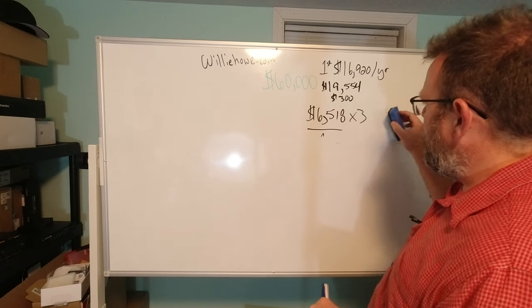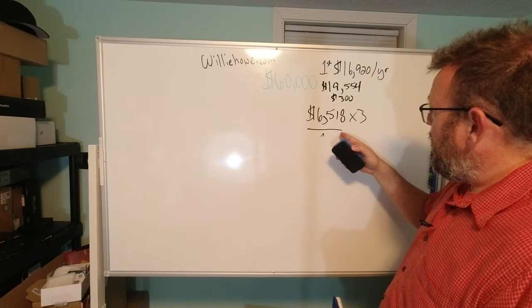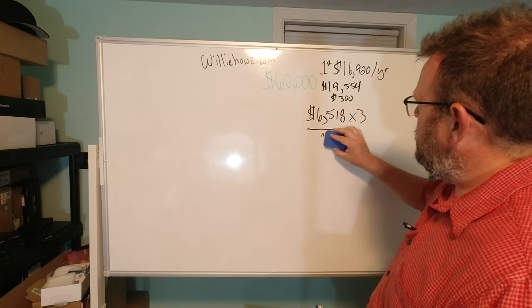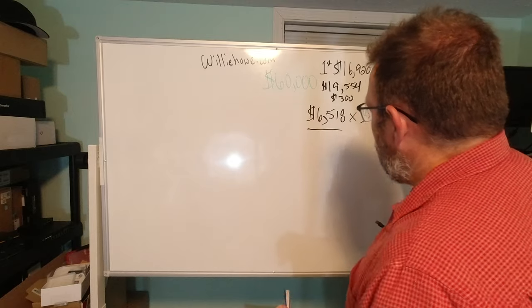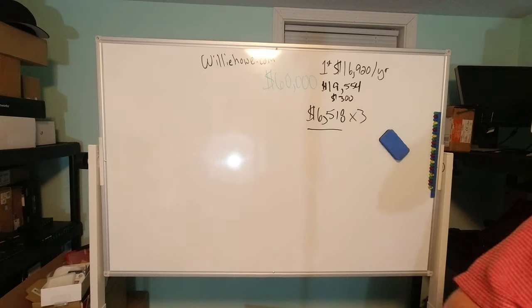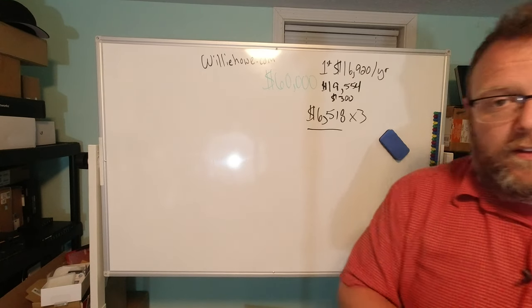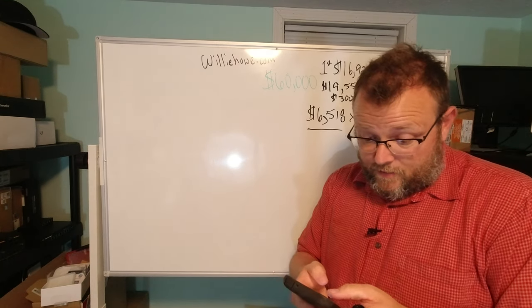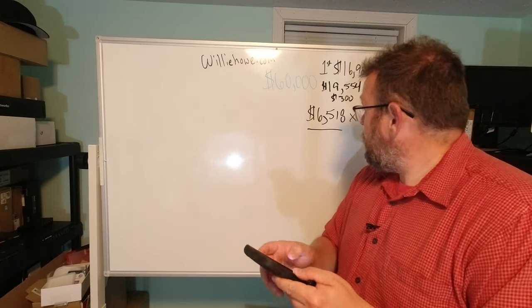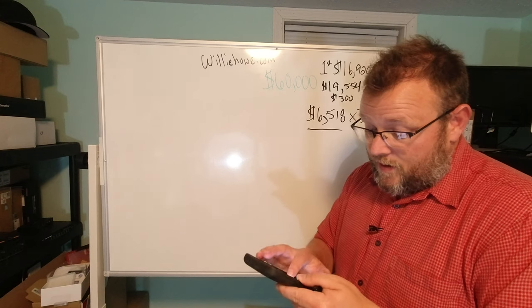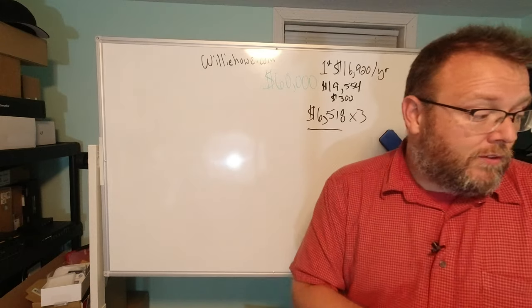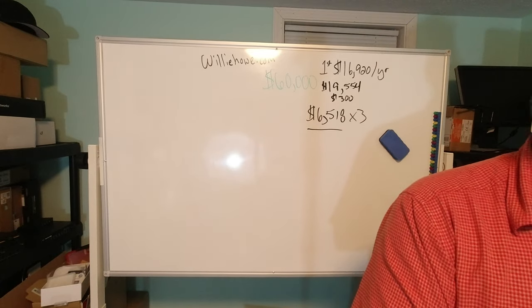All right, so we've got three costs there. $6,518, that's approximately $19,554. I did that math late at night, but let's double-check it. Get the old calculator out here. So we're going to do $6,518 times 3, $19,554, so the math was right there.